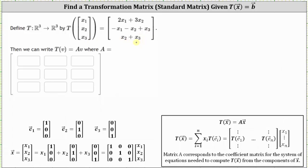We can write the given transformation in the form T of vector v equals A times vector v, where matrix A is a three by three matrix. So we want to find the standard matrix, or transformation matrix, for the transformation under T.